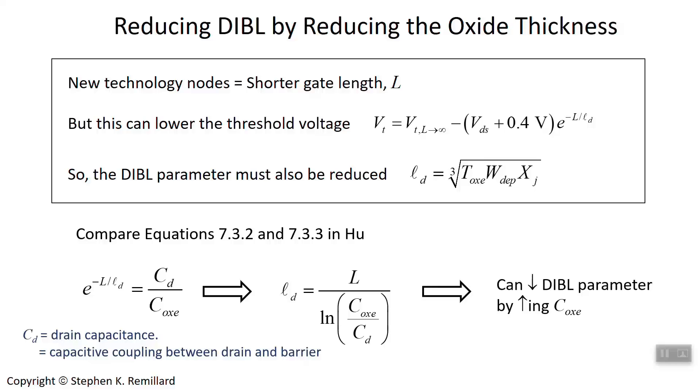We can decrease the DIBL parameter by increasing the oxide capacitance. How do you increase the electrical oxide capacitance? There are two things we can play with: the dielectric constant of the oxide and the thickness of the oxide.